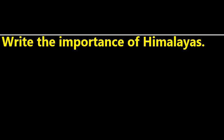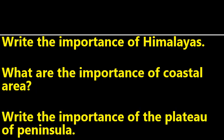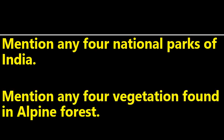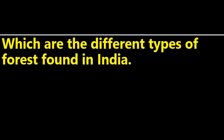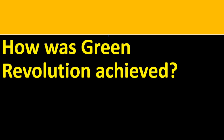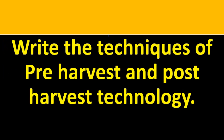Write the importance of the Himalayas. Here a few questions are not answered — I will continue to answer later. Some important questions are not answered because they are easy and you will find the answers. What are the importance of the coastal area? Write the importance of the Plateau of Peninsula. These are all questions from the first lesson in geography. Mention any four national parks of India. Mention any four vegetation found in alpine forest. Which are the different types of forest found in India? Differentiate perennial canal and non-perennial canal. How was the Green Revolution achieved? Write the techniques of pre-harvest and post-harvest technology.